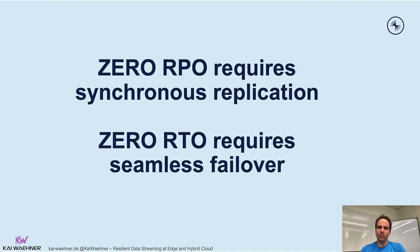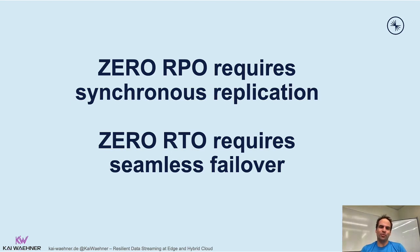Zero RPO requires synchronous replication — even if one node is down, synchronous replication guarantees zero data loss. On the other side, if you need zero downtime then you need a seamless failover. These are pretty easy definitions but super hard to architect. This also shows why real-time data is so important: if you replicate data in a batch process from one node to another it takes longer, whereas if you replicate data in real time, even in case of disaster you lose much less data.